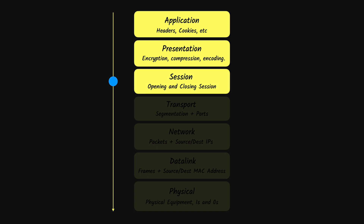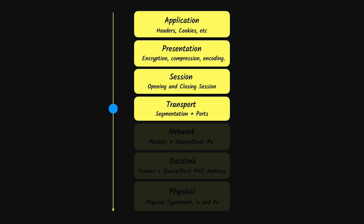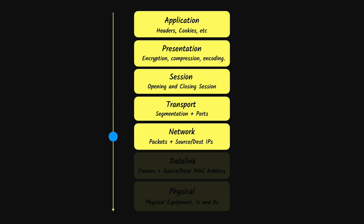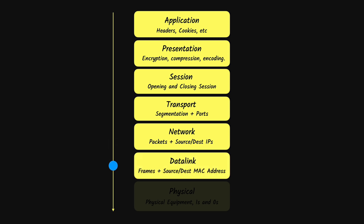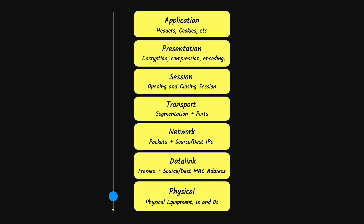The session layer passes the data to the transport layer, which breaks it down into smaller segments and assigns ports to each. These segments are then broken down further into packets at the network layer, where source and destination IPs are assigned. The data link layer then breaks the packets into frames and assigns MAC addresses to each frame. Finally, the data arrives at the physical layer, where the frames are converted to ones and zeros, completing the sender's part.